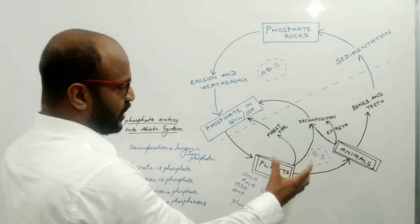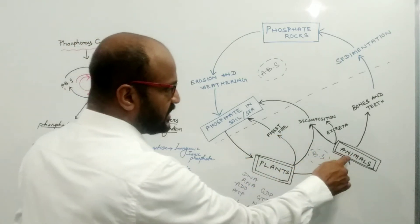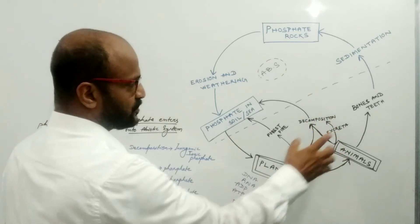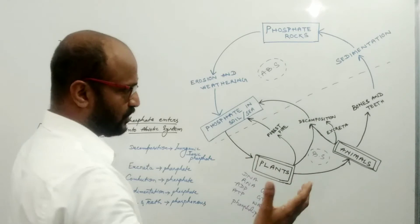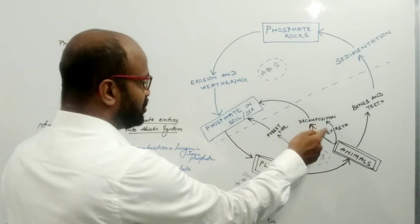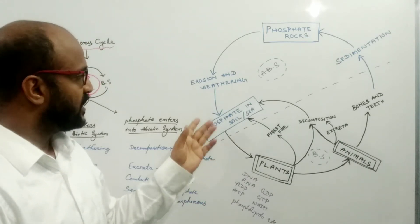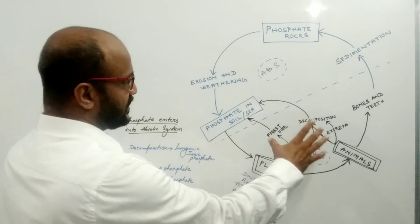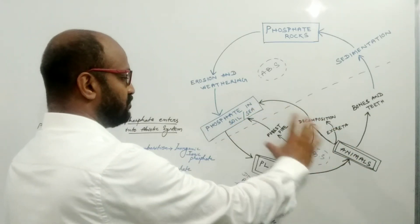The excess amount of phosphorus in the animal body is released through excreta. For example, bird excreta — guano — contains a high amount of phosphorus. Animal excreta releases high amounts of phosphorus into the soil through decomposition in the form of phosphate ions. These are the various methods by which phosphorus from the biotic system re-enters the abiotic system.